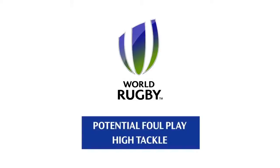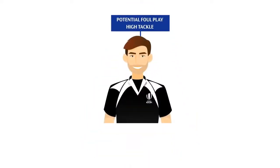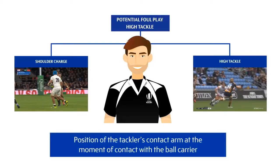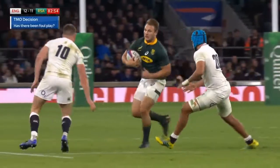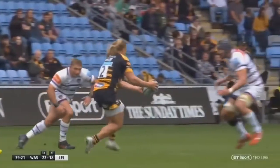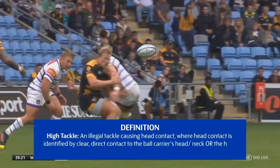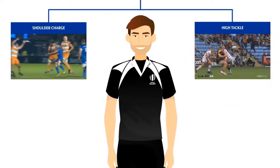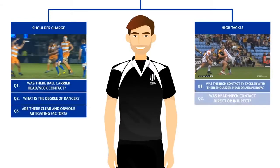When considering a potential high tackle, match officials must first determine whether the tackle is a shoulder charge or a high tackle. To do this, they must look at the position of the tackler's contact arm at the moment of contact with the ball carrier. This example is a shoulder charge because the contact arm is behind the tackler's body at contact. In this example, the tackler's arm is in front of his body, so it is a high tackle. Depending on whether dealing with a shoulder charge or a high tackle, officials must ask a series of questions to determine the sanction.